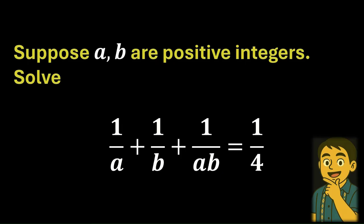Hello everyone, here is today's problem. Suppose a, b are positive integers. We are asked to solve the following equation: 1/a + 1/b + 1/ab = 1/4. Please have a good try before you look at the answer.